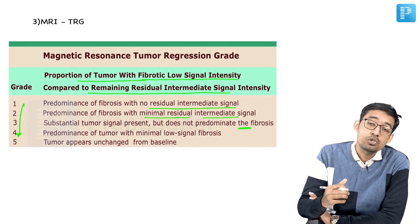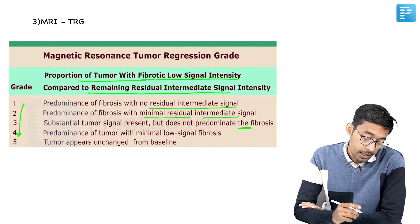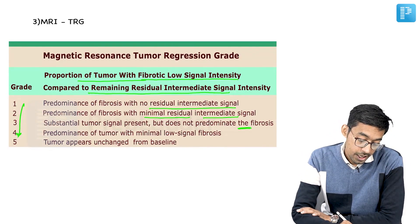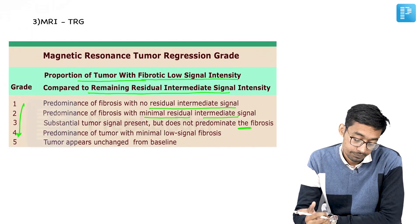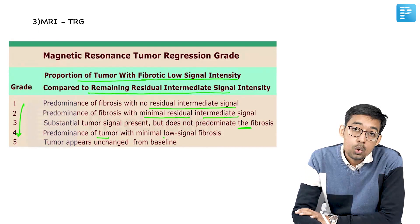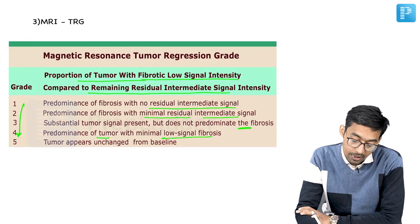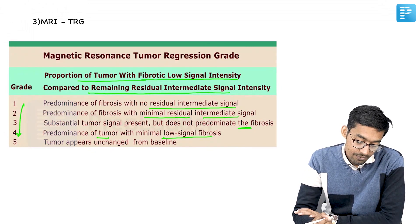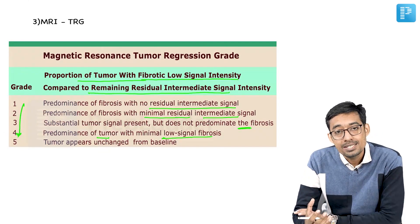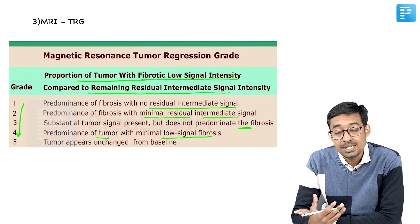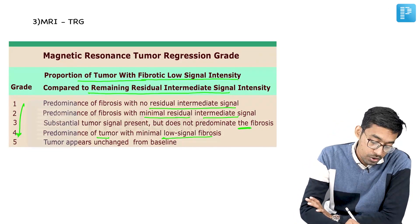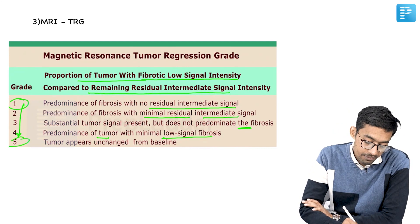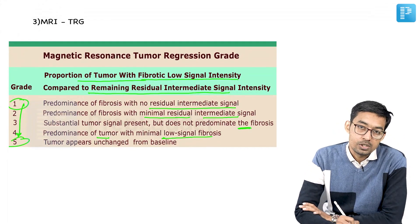In Grade 3, fibrosis still predominates the intermediate tumor signal intensity. Grades 4 and 5 are basically more tumor: Grade 4 shows predominance of tumor with minimal low signal intensity of fibrosis, and Grade 5 is where the tumor is unchanged from its previous staging — there is no response. So Grade 1 response is a good response and Grade 5 is not a good response.